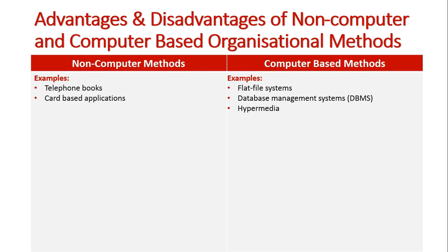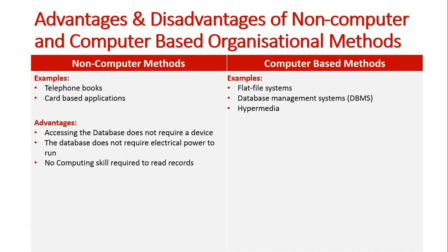Those are our non-computer-based and computer-based methods in this unit of information systems and databases. Looking at the advantages of non-computer methods, we have three primary examples. First, accessing the database does not require a device. In the library, I need to find a book — I just go over to the Dewey Decimal System index, look up the subject, and I can just go. I don't need a phone or to log on to a computer.